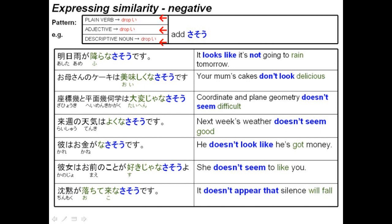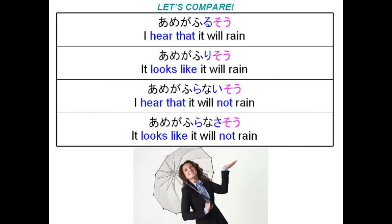Expressing similarity in the negative plain form: the pattern is to take a verb, adjective, or descriptive noun, drop the i, and add sasou. For example: Ashita ame ga furunasasou desu — it looks like it's not going to rain tomorrow. Okaasan no keeki wa oishikunasasou desu — your mum's cake doesn't look delicious. Zahyouki to heimenkikagaku wa taihen janasasou — coordinate and plane geometry doesn't seem difficult.